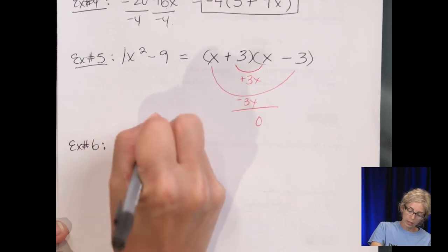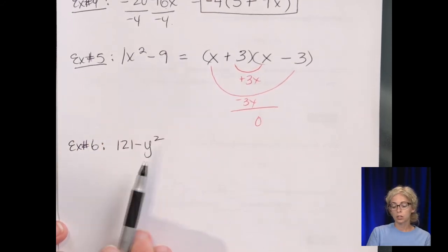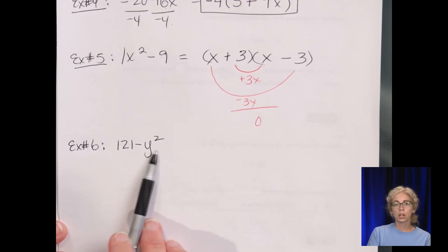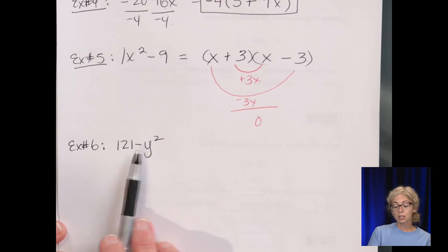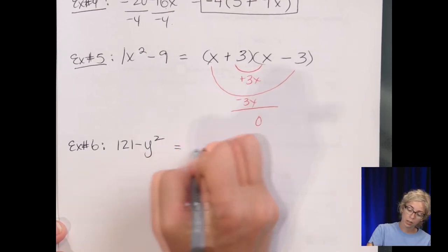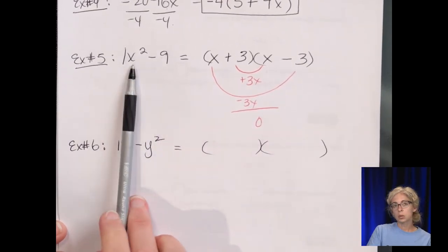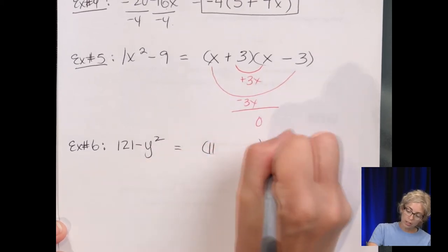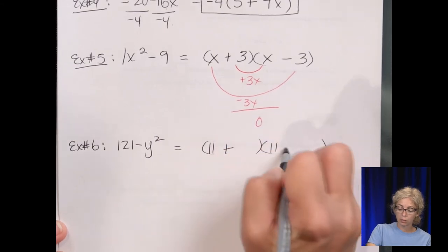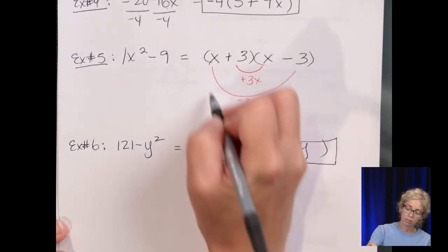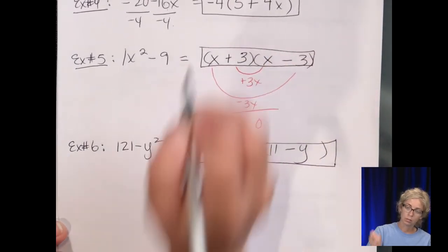Example 6: 121 - y². There's no GCF other than 1, and there's no variable in common. This is the difference of two perfect squares. 121 is a perfect square (11×11). Since the number comes first, set up parentheses: (11 + y)(11 - y), with signs different and y×y = y².